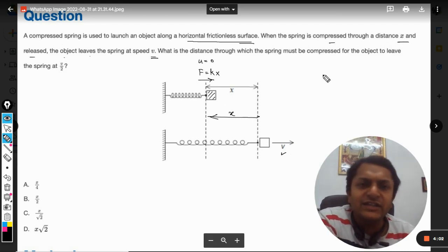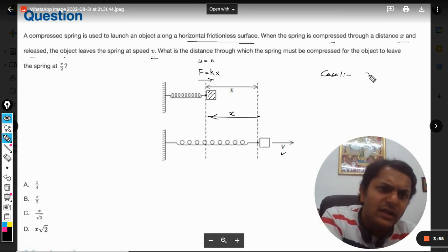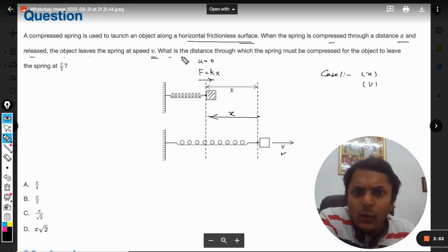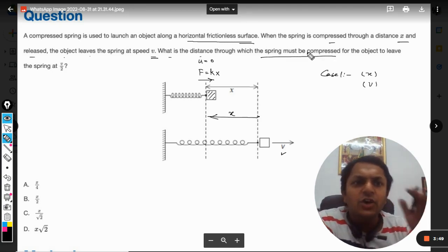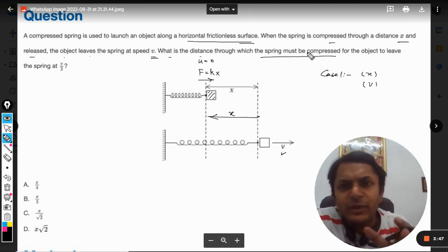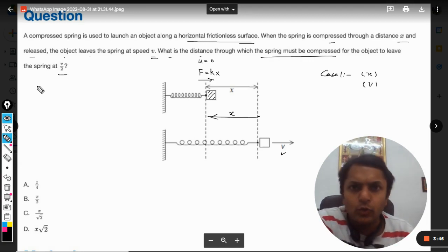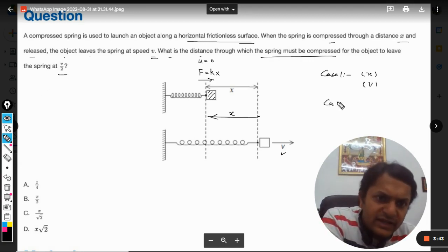That's case number one. Now, if the spring is compressed with x, the velocity gained is v. What is the distance through which the spring must be compressed for the object to leave the spring at v/2?